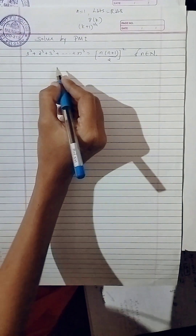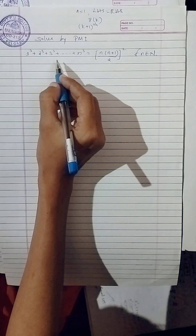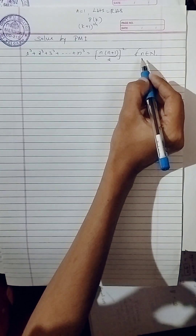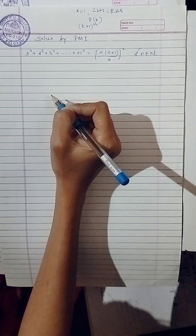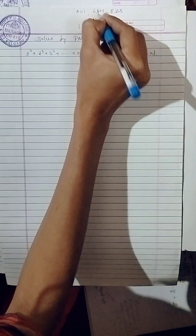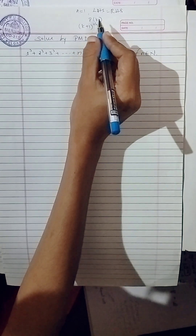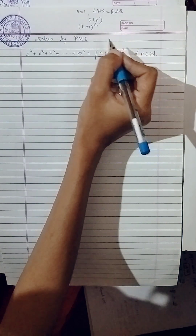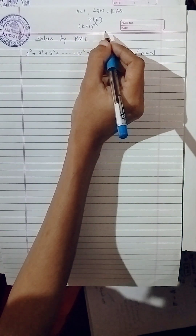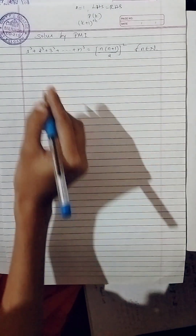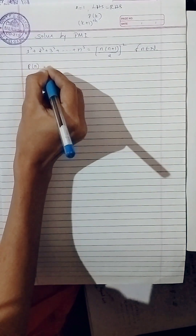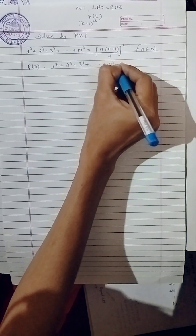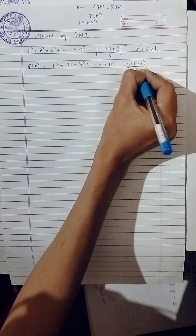We will solve by using the principle of mathematical induction: one cube plus two cube plus three cube up to n cube equals n into n plus one upon two, whole square. By using the principle of mathematical induction, we have to prove this is true for all natural numbers. There are three steps for this proof.